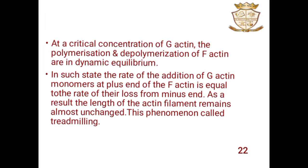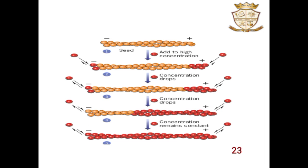The adhesion of G-actin monomers at the plus end of F-actin equals the rate of loss from the minus end. As a result, there is no change and the length of the actin filament remains almost unchanged.